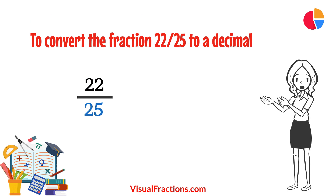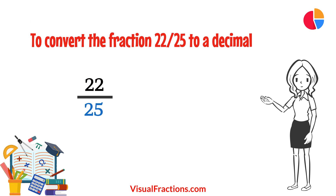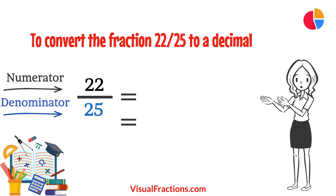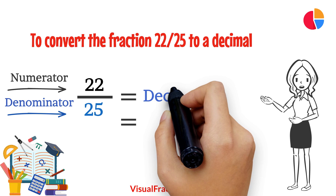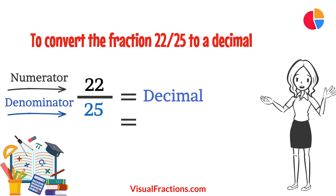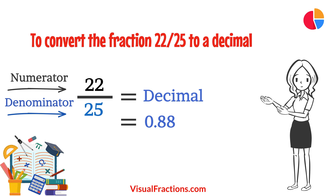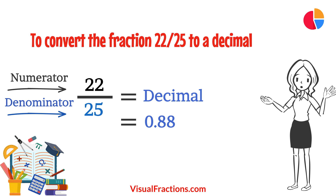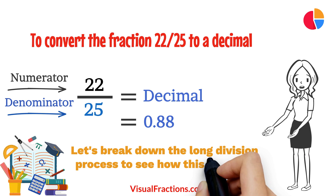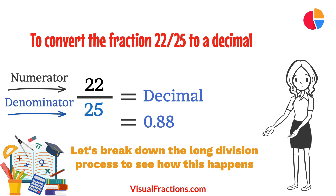To convert the fraction 22/25ths to a decimal, all we need to do is divide the numerator — the top number — by the denominator — the bottom number. In this case, we want to convert 22/25ths to a decimal, so we simply divide 22 by 25.